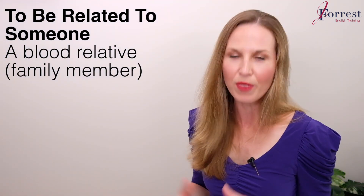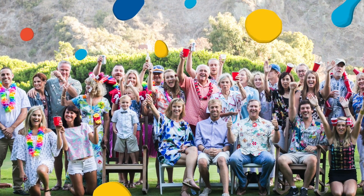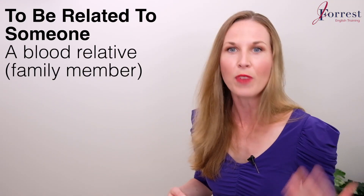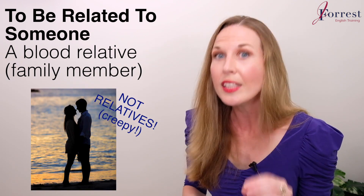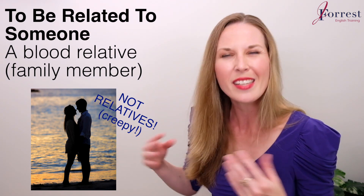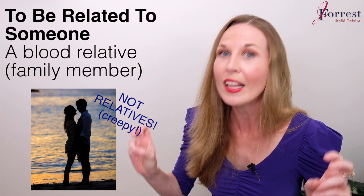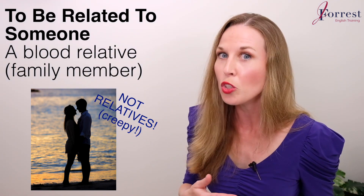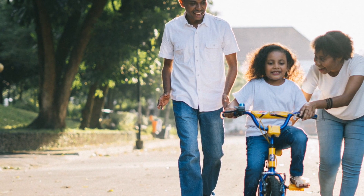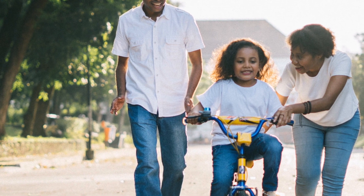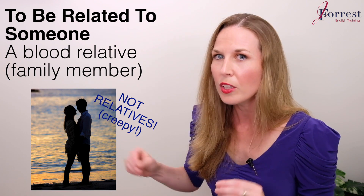Let's say your friend invites you to their family reunion. At a family reunion, most people are going to be related — though not everybody, because some people might bring friends or someone they're dating, and they're not related to them. That's a very important point: you're not related to your spouse, the person you're married to, because that would mean you share the same DNA, genes, and blood. You're married to them and part of their family, but you're not blood relatives. You're related to your mother, father, brother, sister, aunt, uncle, grandmother, grandfather, cousins, and the extended family down the family tree — but not to the person you're married to.